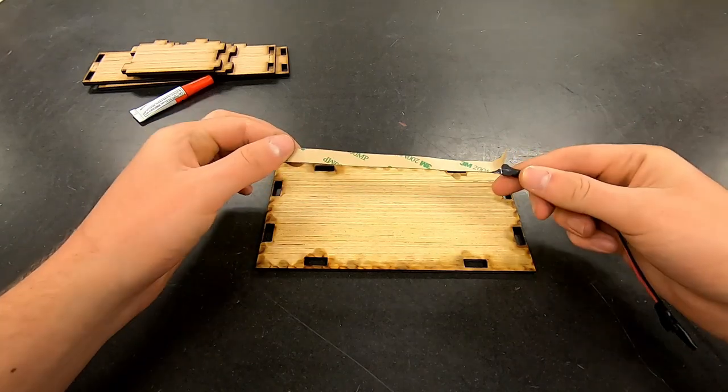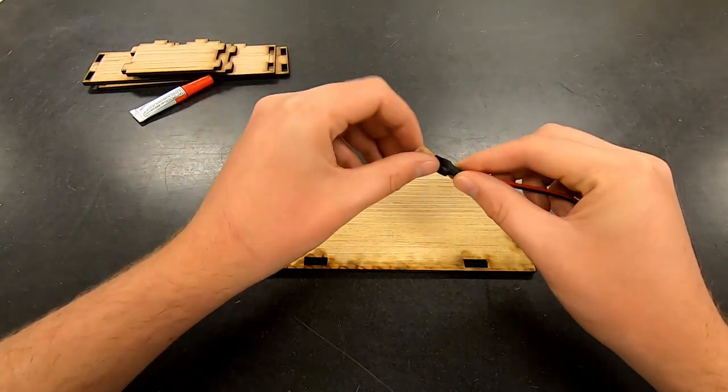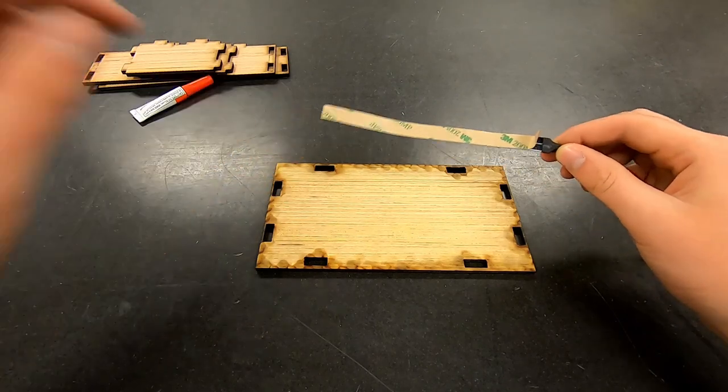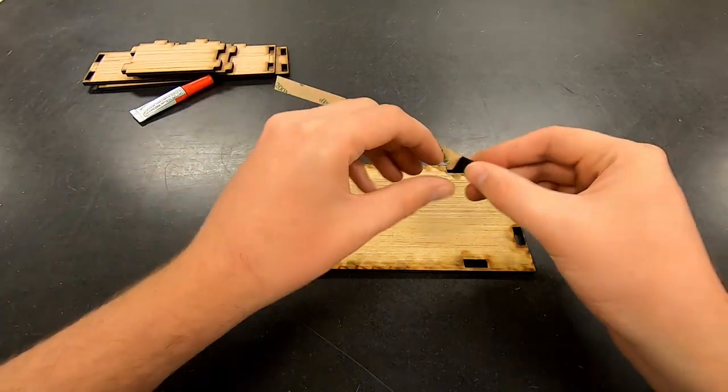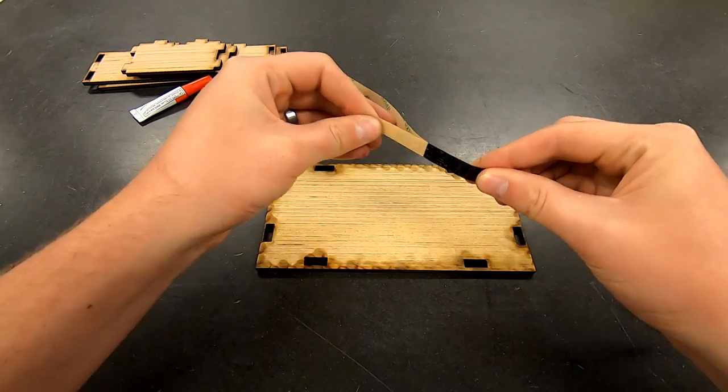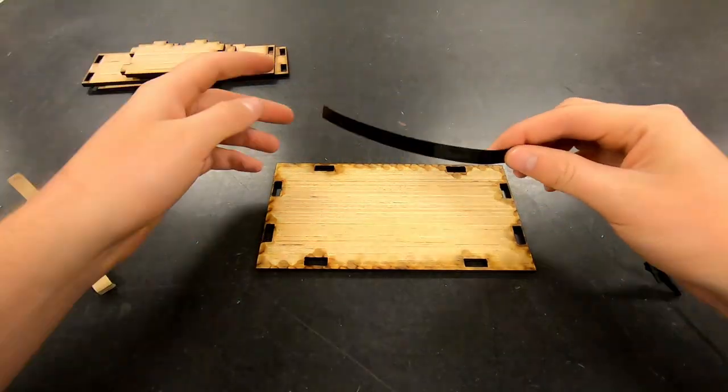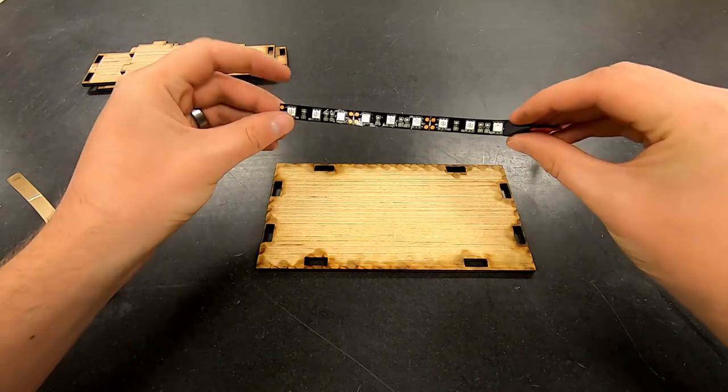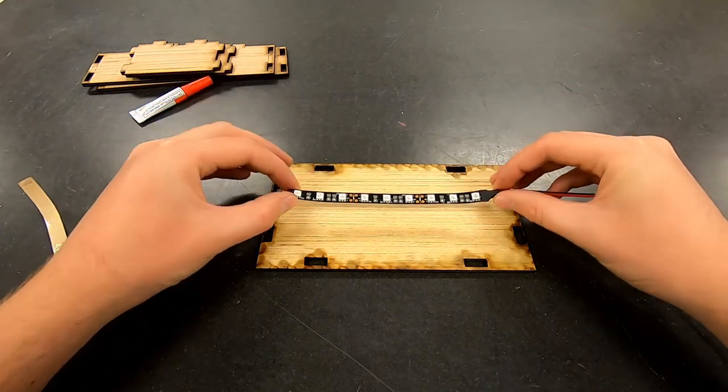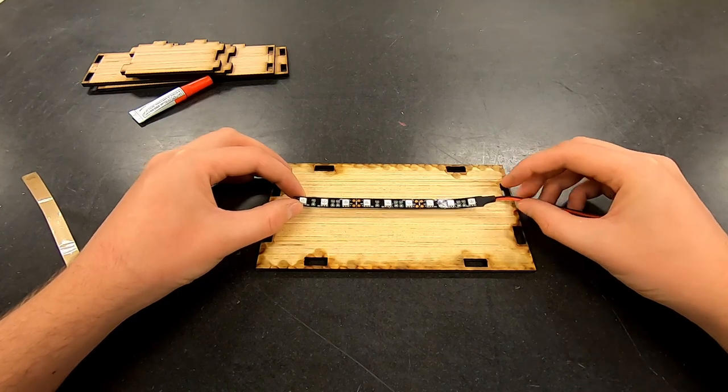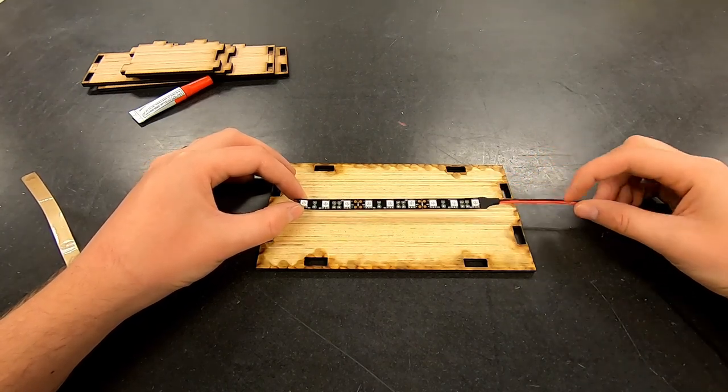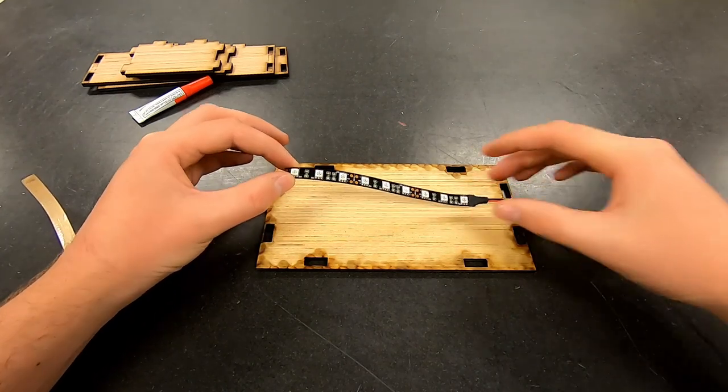To do this, the LED strip has a piece of adhesive tape on the back that you simply have to peel the backing off of. Now the back of the LED strip can simply be pressed onto the top. Try and make sure that it's centered within the board and that the cable runs out in between the holes on either of the sides.